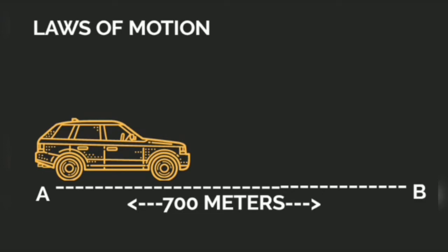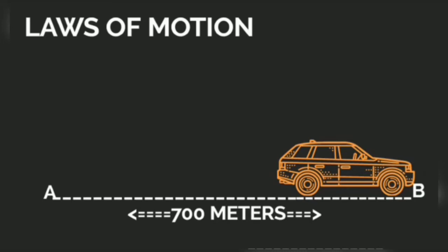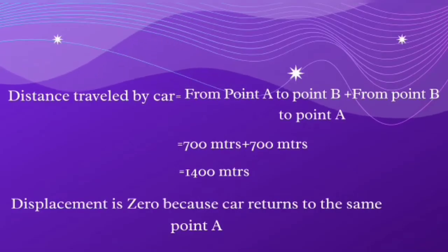If a car starting from point A goes to point B and then returns to point A, how much distance has it traveled and what is its displacement? Distance traveled by car from point A to point B plus from point B to point A is equal to 700 meters plus 700 meters, which equals 1400 meters. Displacement is zero because the car returns to the same point A.